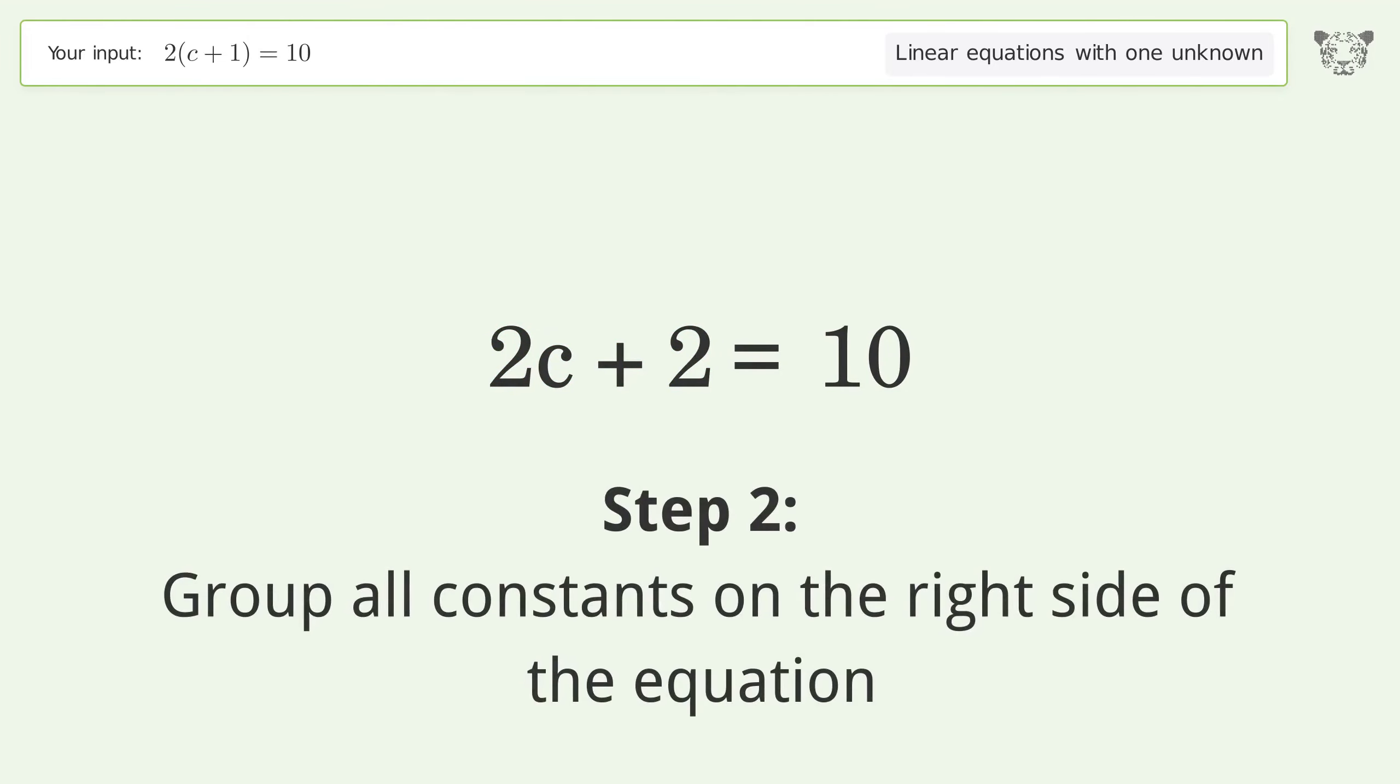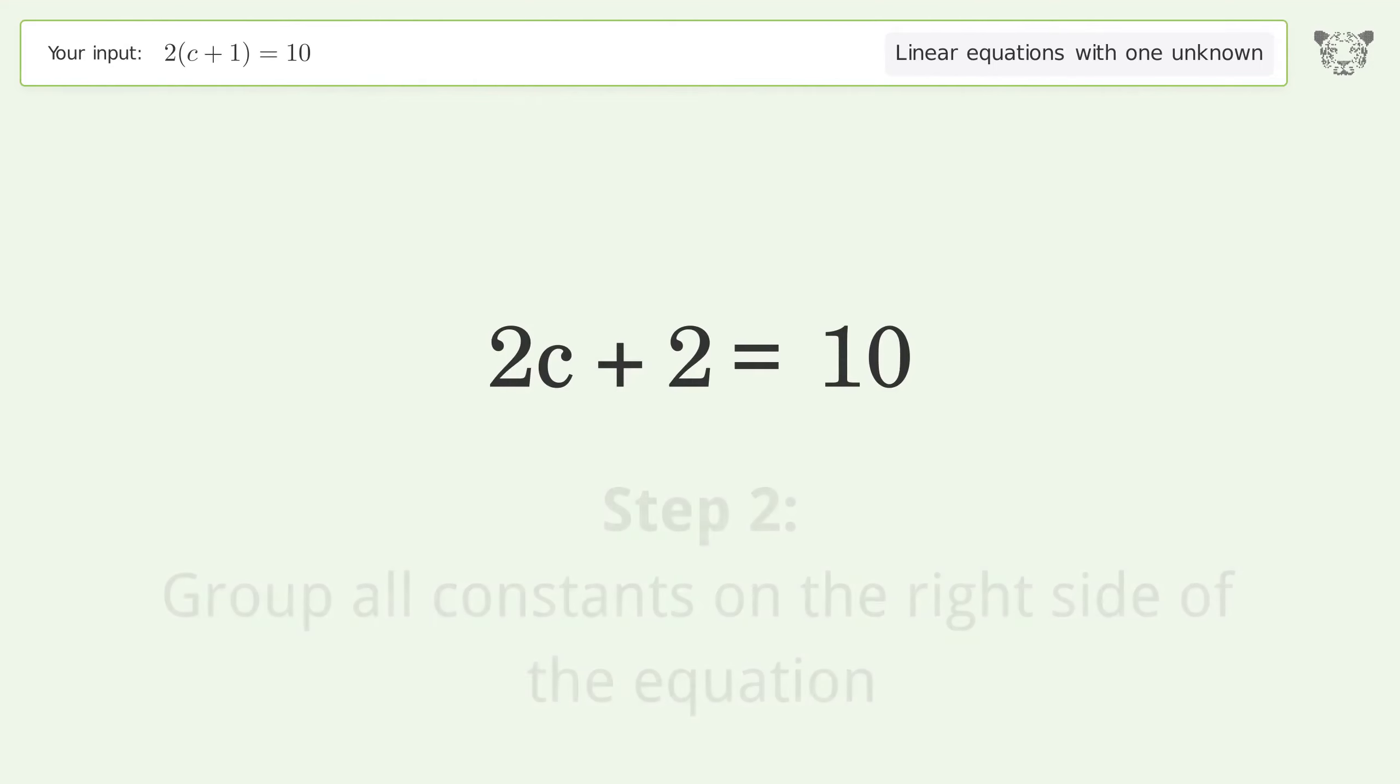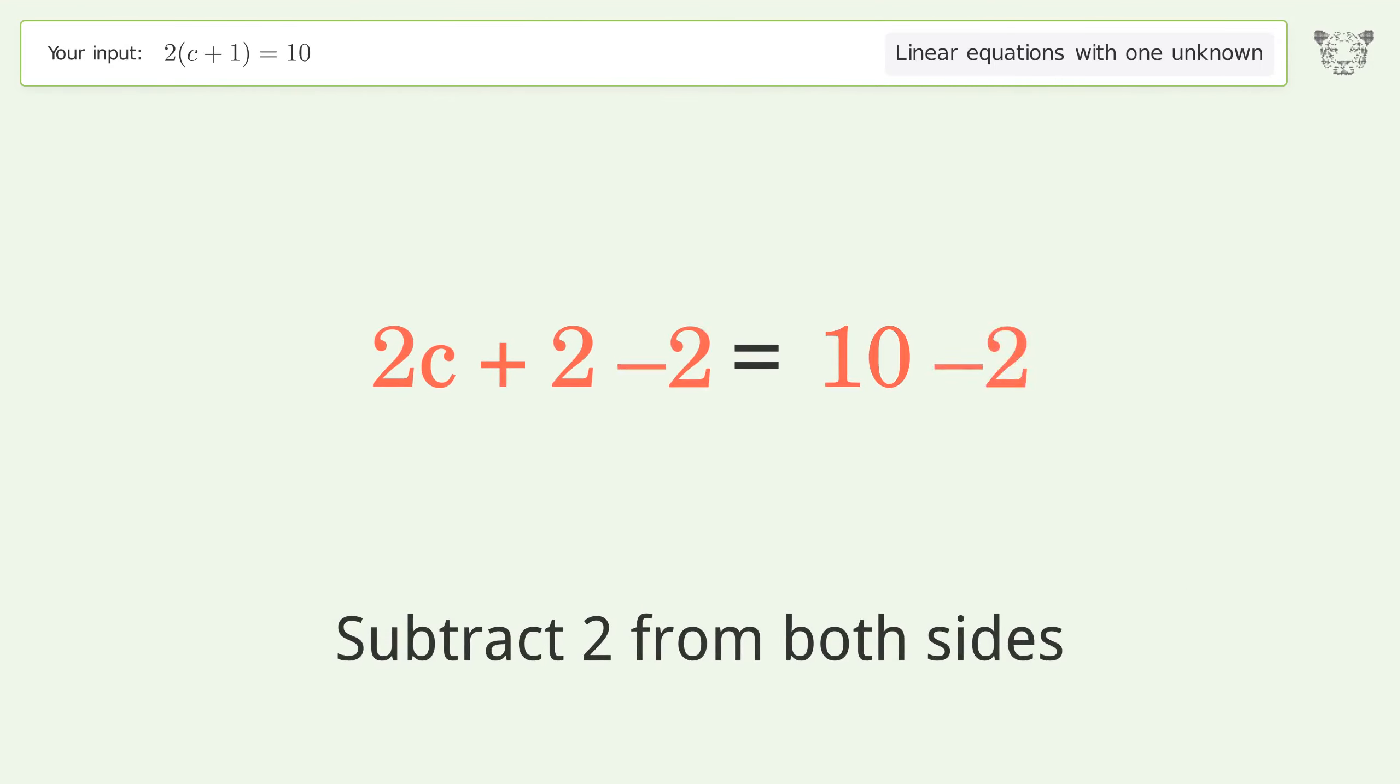Group all constants on the right side of the equation. Subtract 2 from both sides. Simplify the arithmetic.